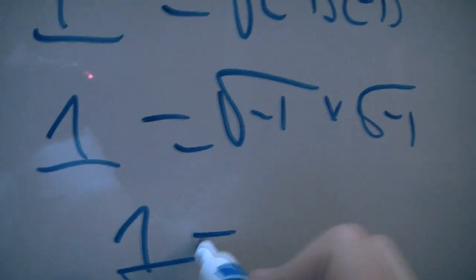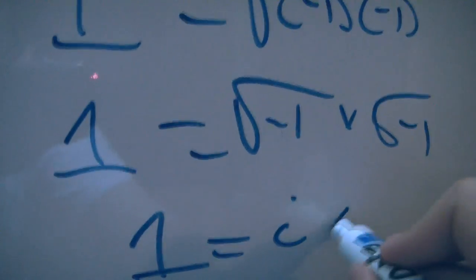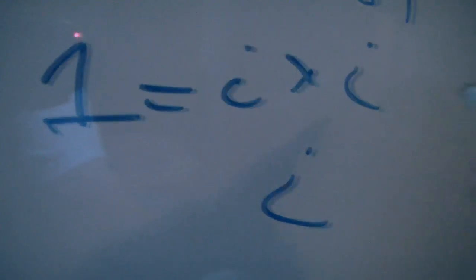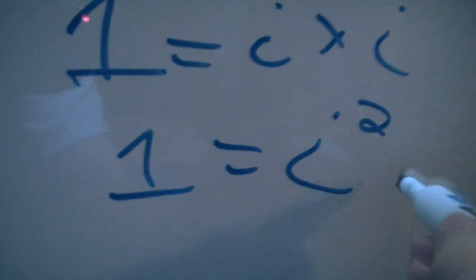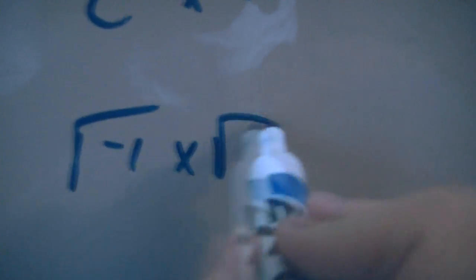We have 1 equals I times I. That would be I squared, equal 1, and I squared, sum root of negative 1 times root of negative 1.